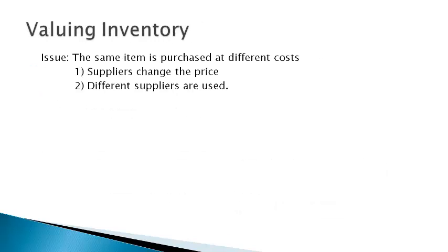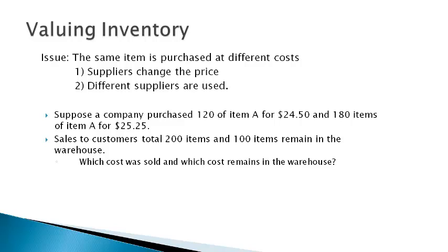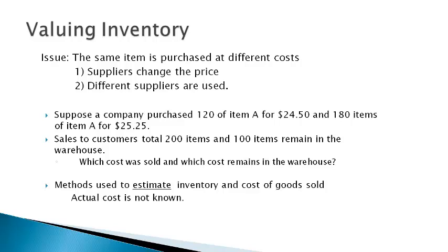The specific identification method cannot be used when the same item is purchased repeatedly at different costs. This occurs when suppliers change prices or different suppliers are used for the same item. Suppose a company purchased 120 of item A for $24.50 and then 180 items of item A for $25.25. Sales to customers total 200 items and 100 items remain in the warehouse. The accountant does not know which cost was paid for items remaining in the warehouse, as all items look the same and it is not possible to determine if the items cost $24.50 or $25.25. Accounting guidance gives a choice of methods to estimate the value of ending inventory when the actual cost of each one is not known.